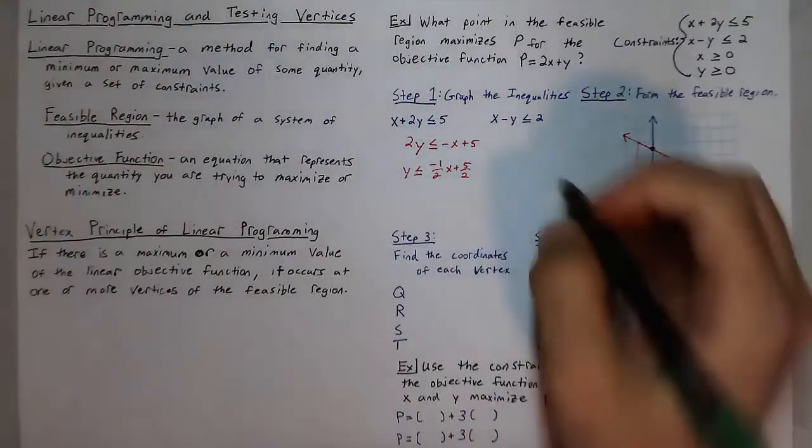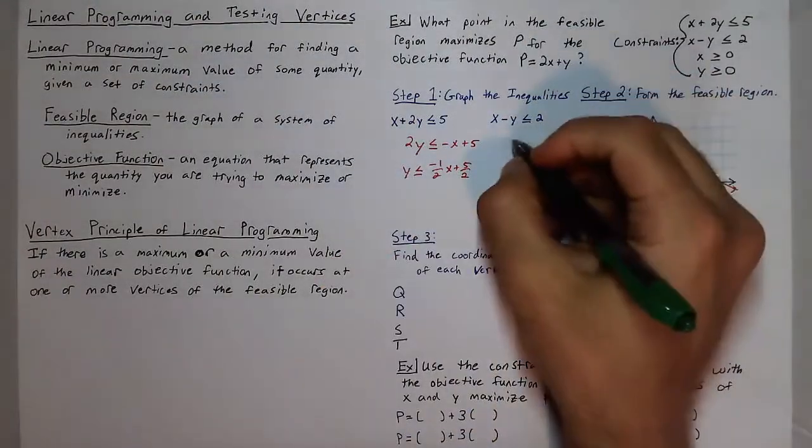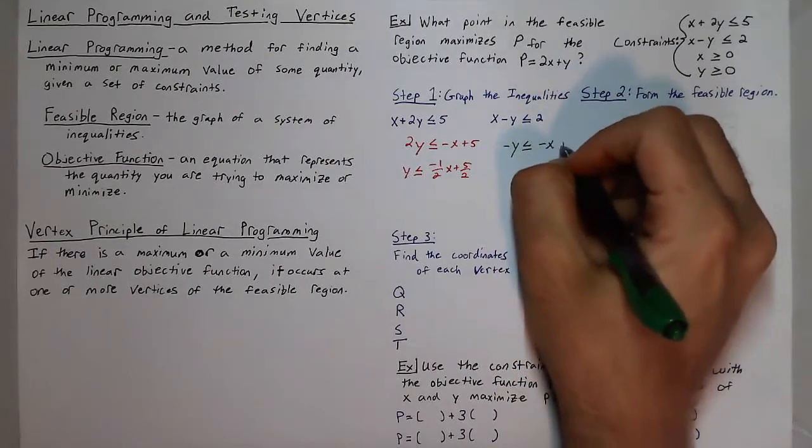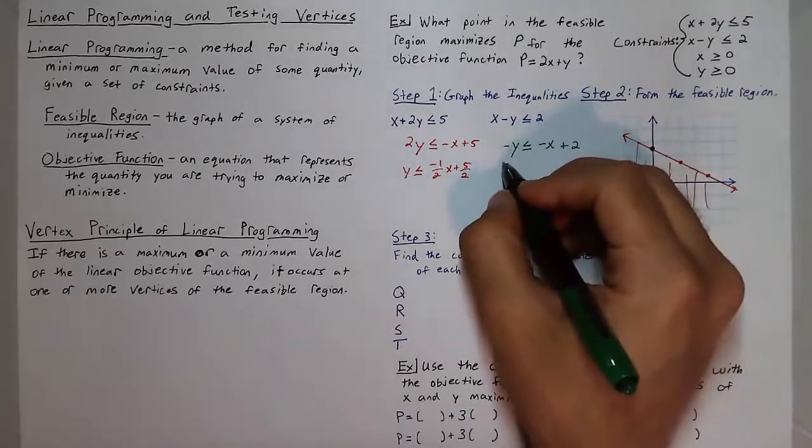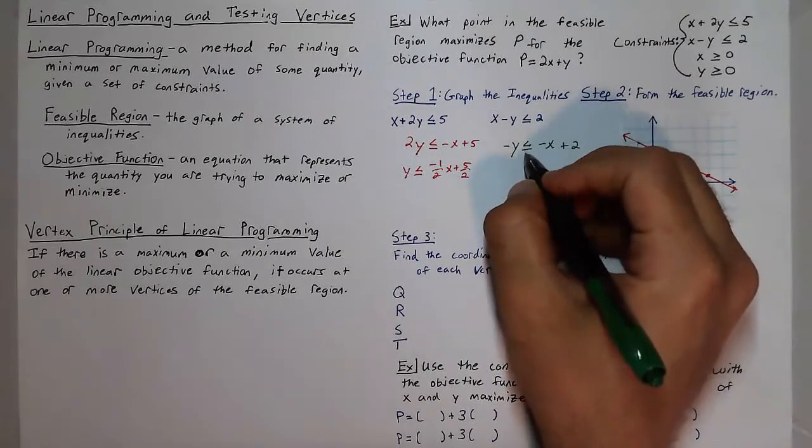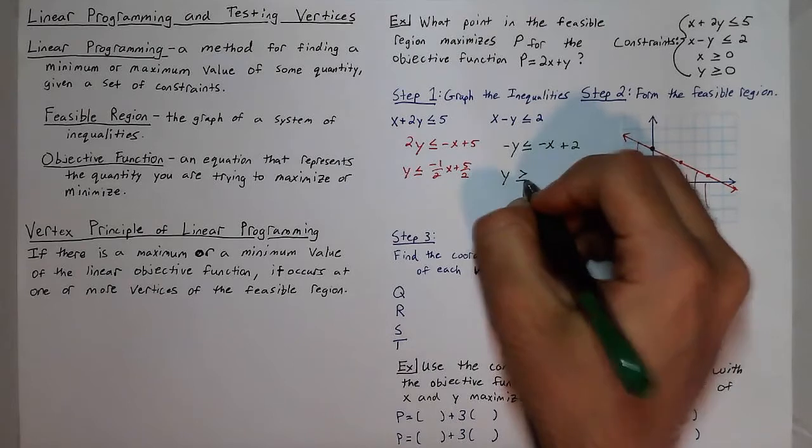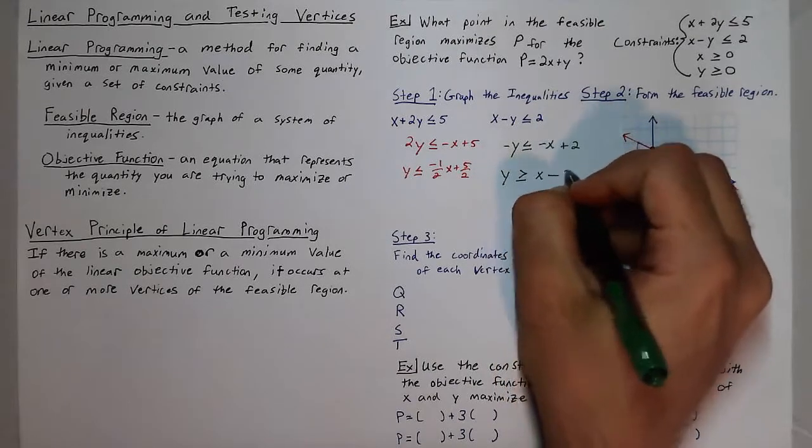The other equation is a little bit easier to solve. We have to subtract x, give us negative y is less than or equal to negative x plus 2. And then we have to divide by a negative 1, which is going to cause this inequality to flip. So we have now y is greater than or equal to x minus 2.